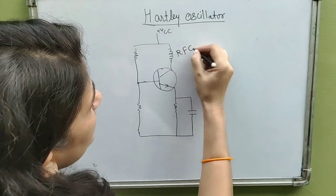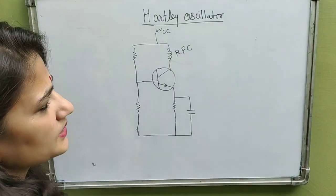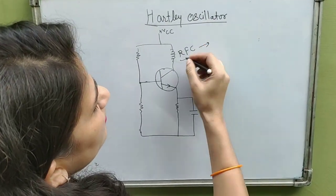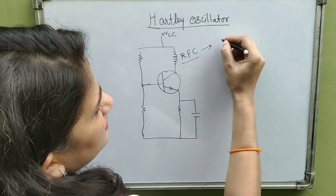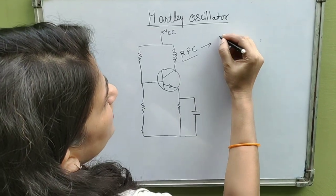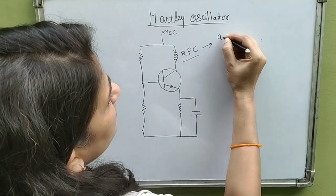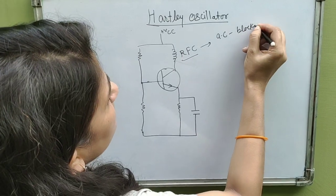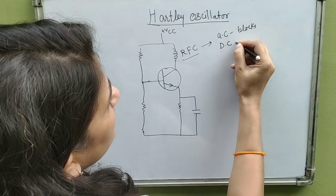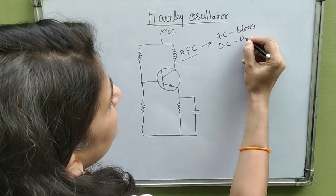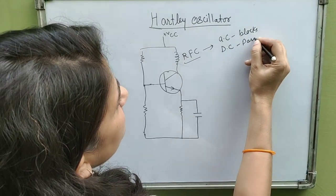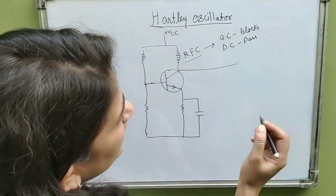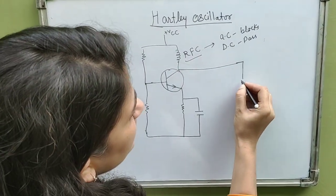What is the use of this radio frequency coil? It acts as a choke — it always blocks AC and passes DC, preventing unwanted AC signals from interfering with the circuit.